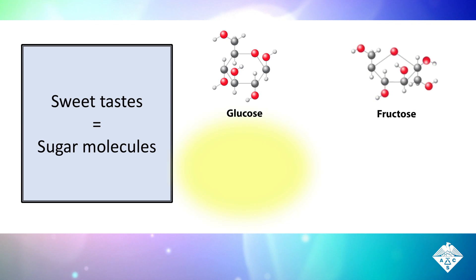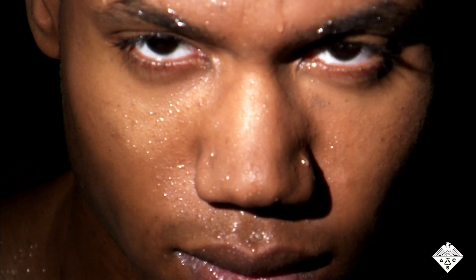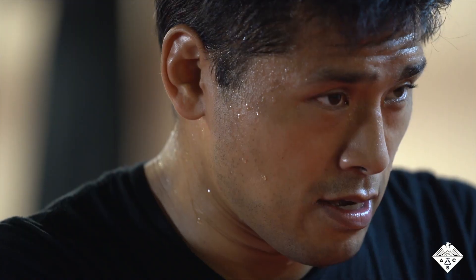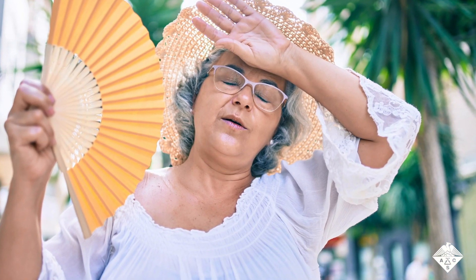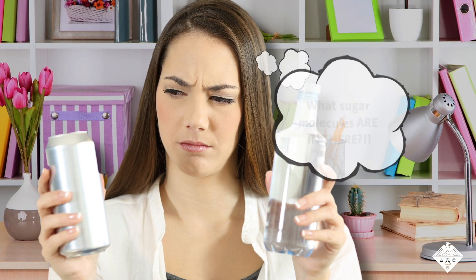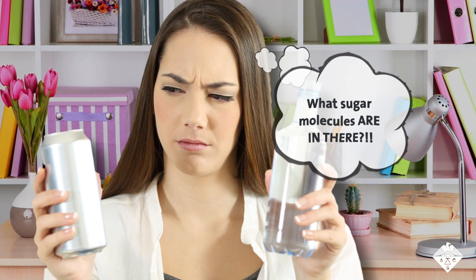Sweet tastes in drinks can come from many types of sugar molecules, including glucose, fructose, and sucrose, as well as less common ones such as maltose. There are also sugars in sweat, which could be tracked as a simple, non-invasive way to monitor blood sugar. But it's hard to tell which molecules are present based on taste or look alone.